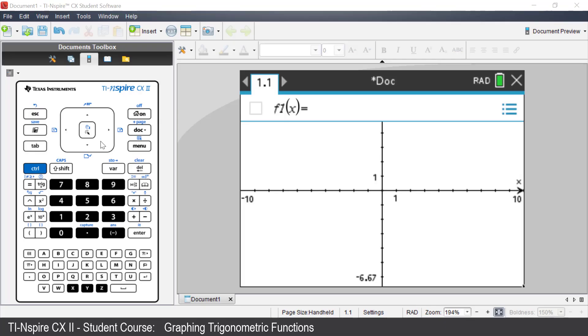In a graphs application, check to see that the calculator is in radian mode. With the CX2, you can move your cursor to be over the degree or radian in the top right hand corner. On the handheld, press the middle of the touchpad to change the mode. As I'm using the computer software, I can click using the mouse to change the mode. Click once to change to degrees and click again to change back to radians.